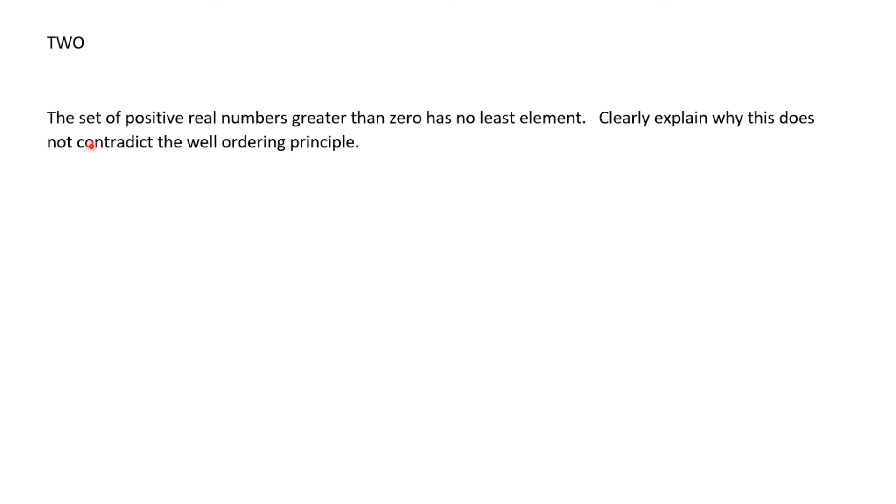Number two, the set of positive real numbers greater than zero has no least element. Clearly explain why this does not contradict the well-ordering principle. The well-ordering principle was in the PDF that you were supposed to have looked at while I was doing my remembrance road trip, but it is from chapter 2.